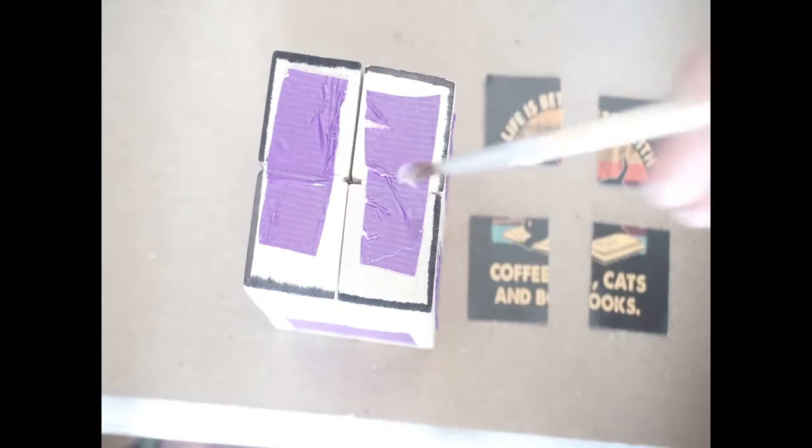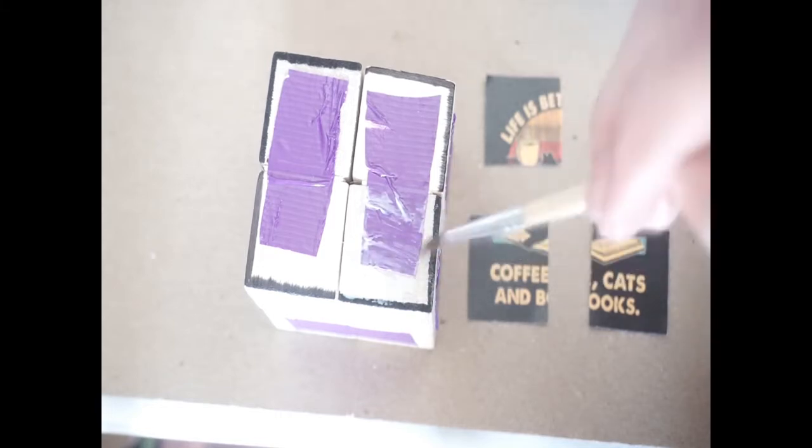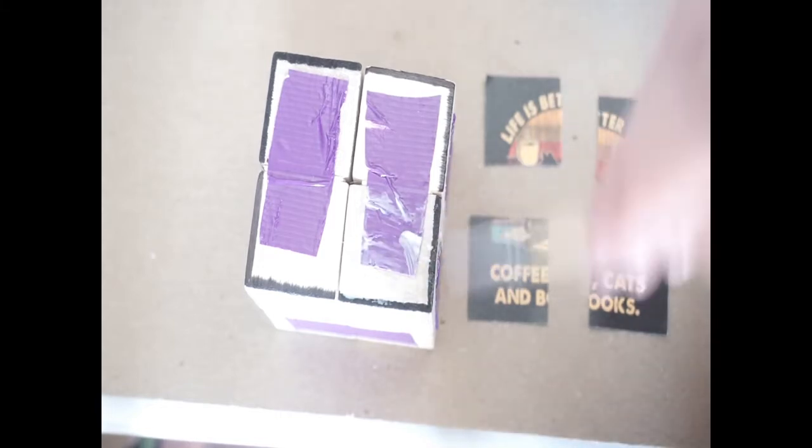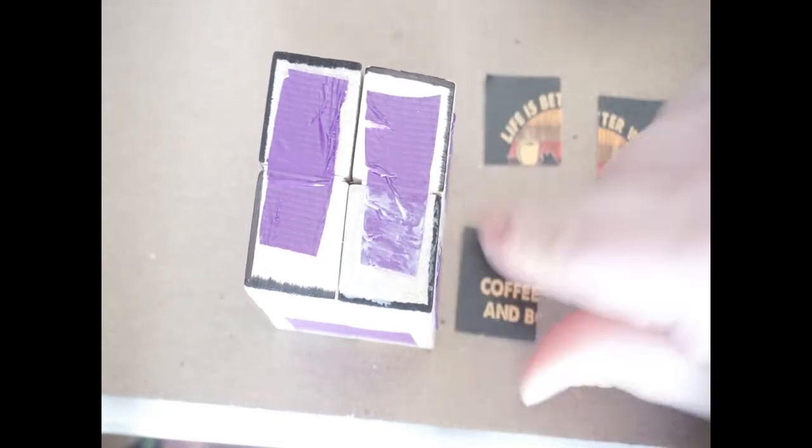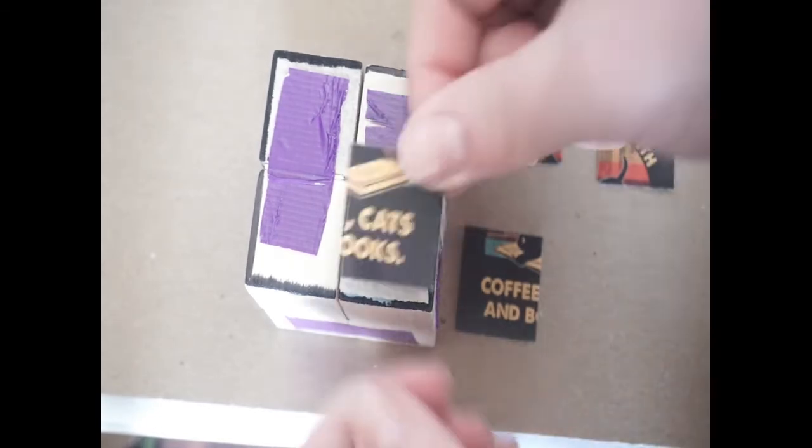And now I will glue them on with the Mod Podge. And you want a light to medium layer of Mod Podge on here. If you're using photo paper, which I don't really recommend, but if you are, maybe a thicker layer of Mod Podge.